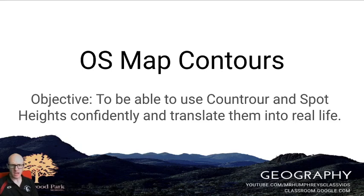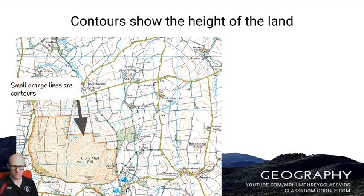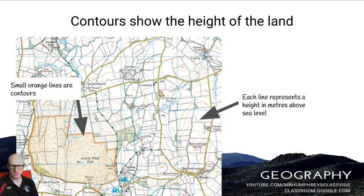We're going to look at how height is represented on an OS map. This is done through contours and spot heights. Contours are represented by small orange lines that flow around the Ordnance Survey map, and each line represents a height above sea level.